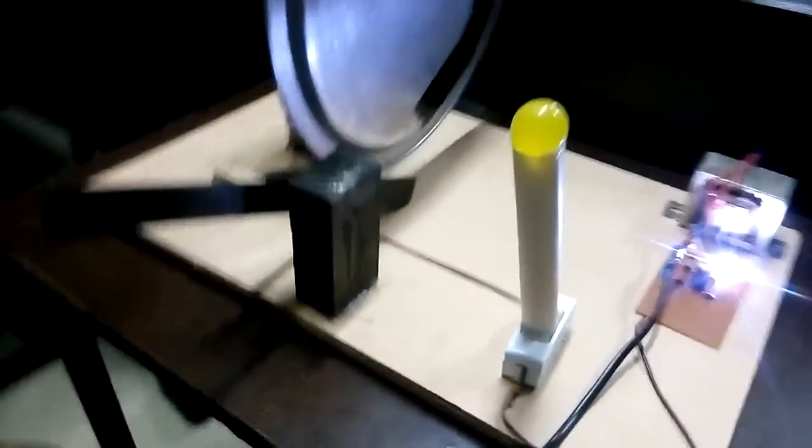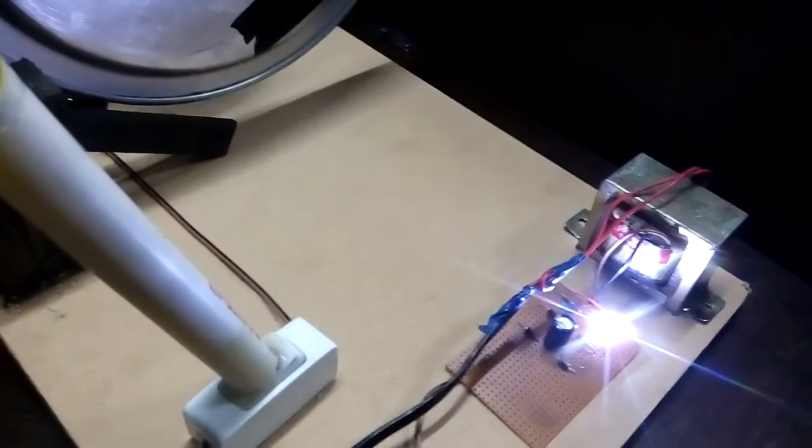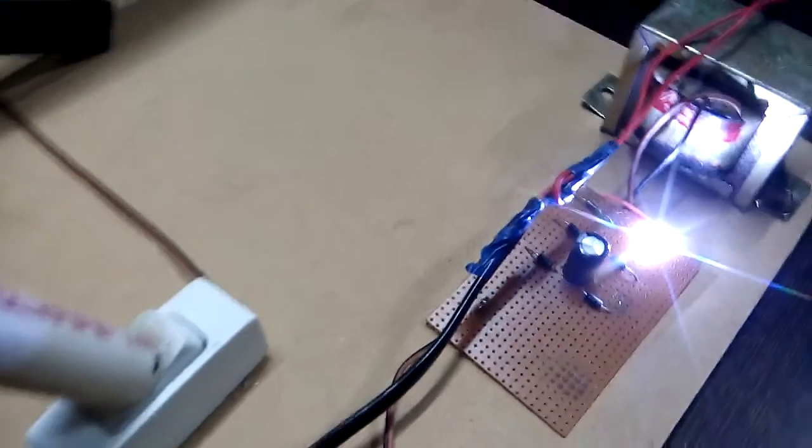We have a power supply section here with us. Our transformer is there, a rectifier circuit is there, then we have a capacitor as well as an indicator LED. Here you can see the output from the power supply.